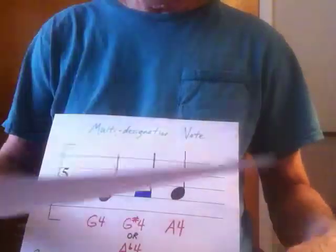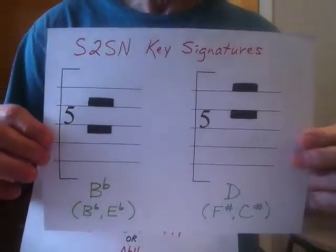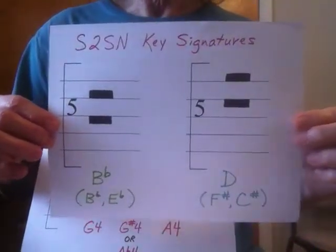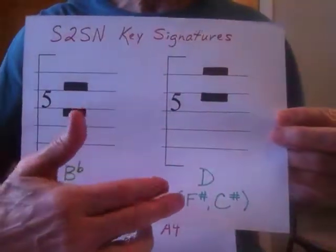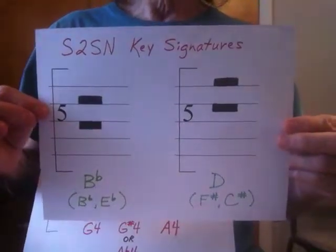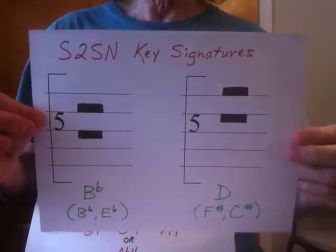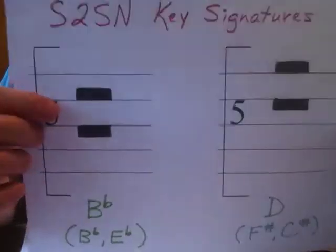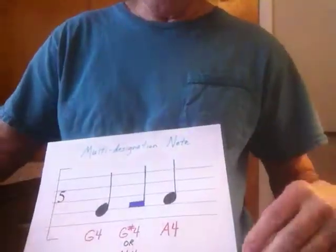Here's an example of what you could do if you wanted to use key signatures using the note heads. You can stop the video and look at it. Here you would have the key signature for B-flat, and here the key signature for D — key of D. Very easily incorporated into systems as key signatures — just a rectangular note head. You don't need sharps and flats; you just don't need them.